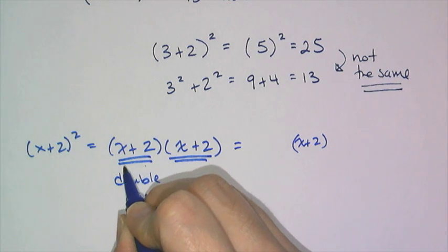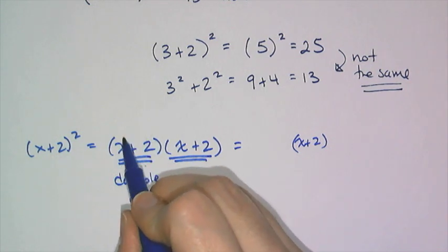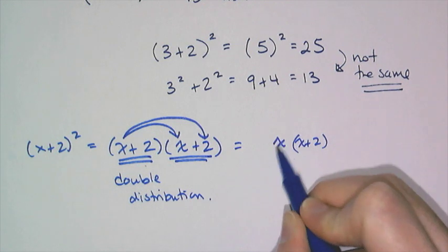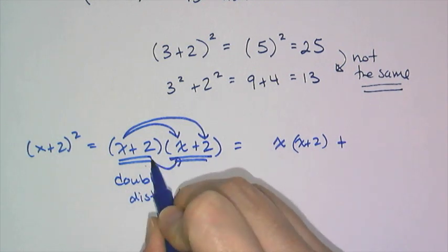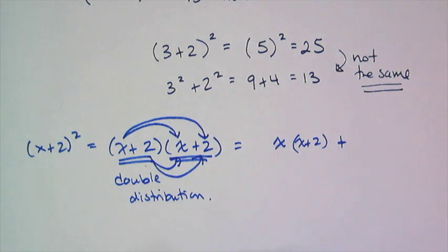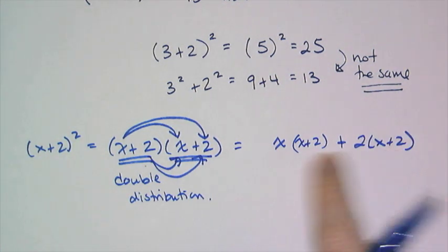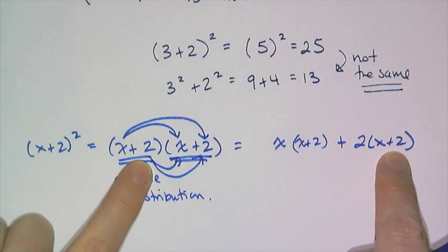What I mean by that is I'm going to take this (x+2) and I want to distribute two things over it: I want to distribute the x, and I want to distribute the 2. This is the other way of writing this expression.